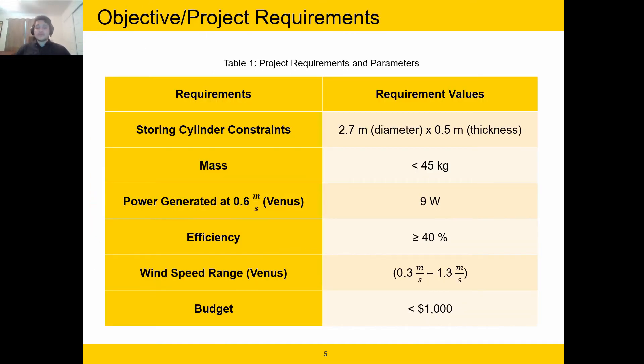The parameters and requirements for this project are that the full-scale version of the turbine will be 2.7 meters in diameter and half a meter thick. The mass of the turbine itself has to be under 45 kilograms, and it needs to be able to generate 9 watts of power at the Venusian winds moving at 0.6 meters per second. The desired efficiency is 40 percent efficient mechanical efficiency or higher. At the proposed landing site, it has been estimated that the Venusian winds vary between 0.3 meters per second to 1.3 meters per second, and the budget for the team for this year is just about a thousand dollars.